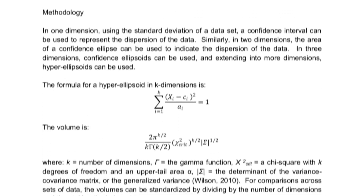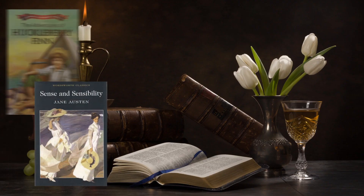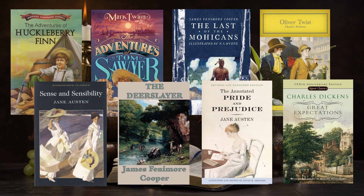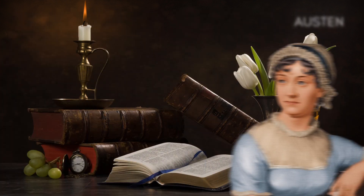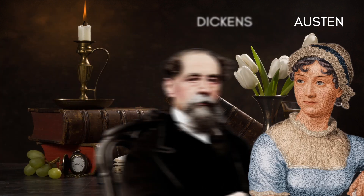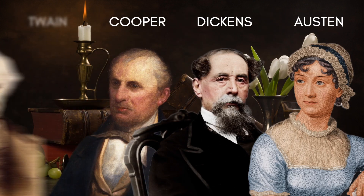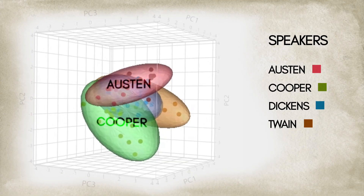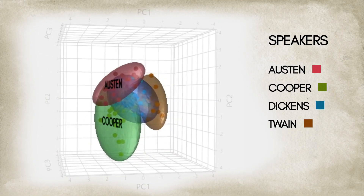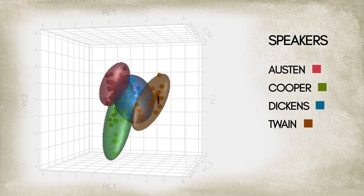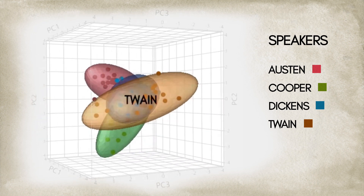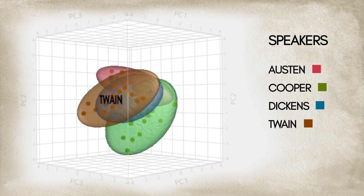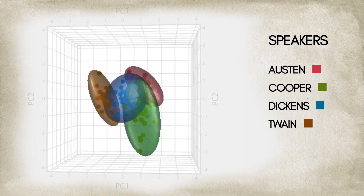In a recent study, researchers statistically analyzed the word patterns of fictional characters created by four highly regarded 19th-century novelists: Jane Austen, Charles Dickens, James Fenimore Cooper, and Mark Twain. As depicted in this graph, their results show that, to varying degrees, each author was able to create a distinct voice for each of the fictional characters in their stories.